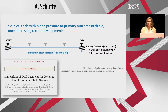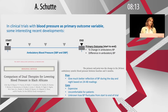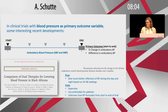Ambulatory BP has clear benefits. The pros are it gives a much better reflection of blood pressure during the day and night based on several readings. But it's expensive and uncomfortable for patients — there have been many efforts to improve device design. And it still leaves unknown what happens in the middle of the trial if you only look at the change from beginning to end.